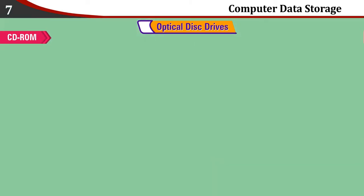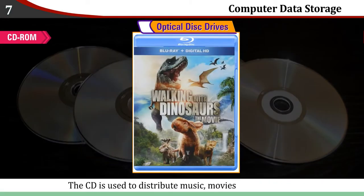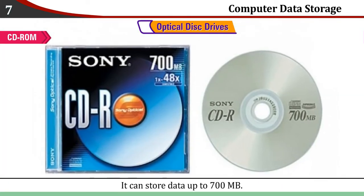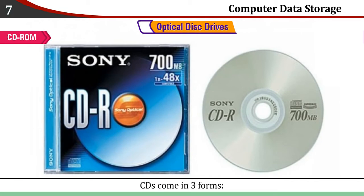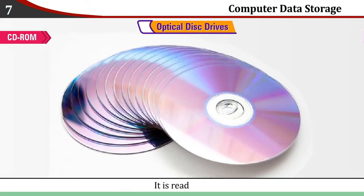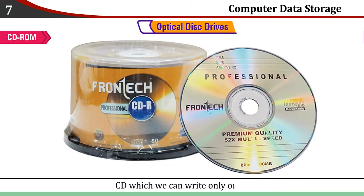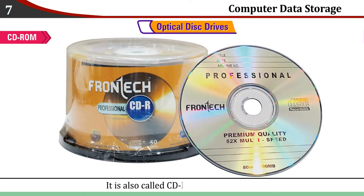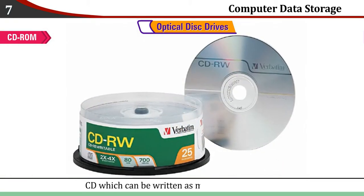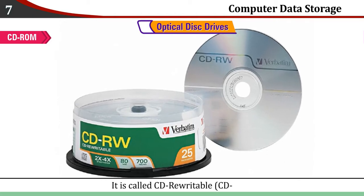CD-ROM: The CD is used to distribute music, movies, and programs. It can store data up to 700 MB. CDs come in three forms: CD-ROM, whose data cannot be erased and is read-only; CD-R, which we can write only once, also called CD Recordable; and CD-RW, which can be written as many times as needed, called CD Rewritable.